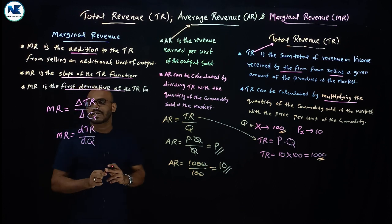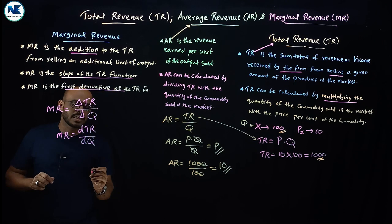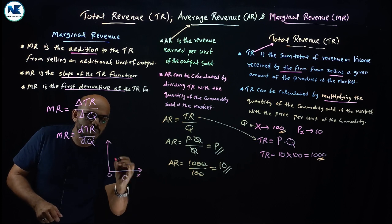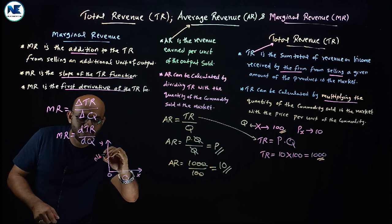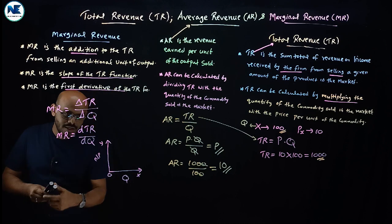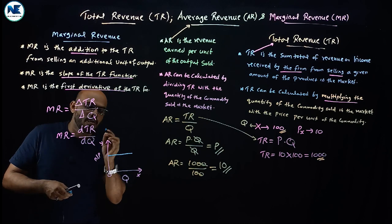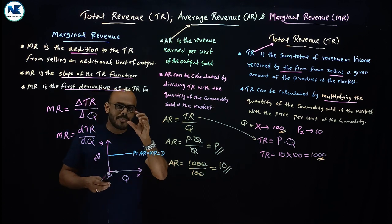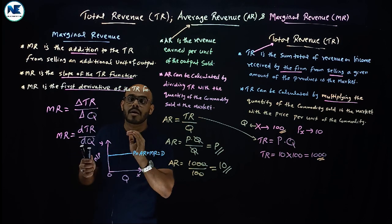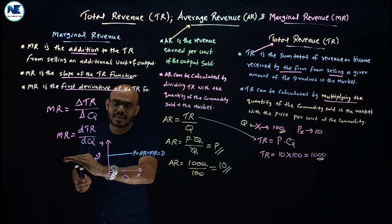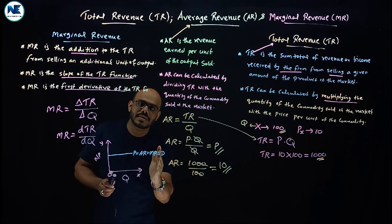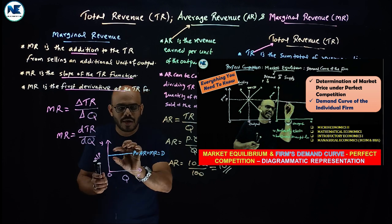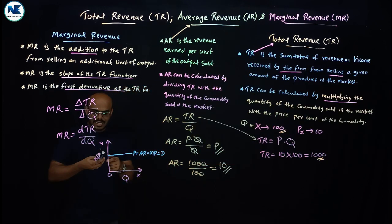On the graph, the OX axis shows output and the OY axis shows revenue or price. Under perfect competition, the individual demand curve is a horizontal straight line where price equals average revenue, which also equals marginal revenue, which is also the demand curve. The price is set by the market, so average revenue coincides and intersects with marginal revenue as a horizontal straight line.